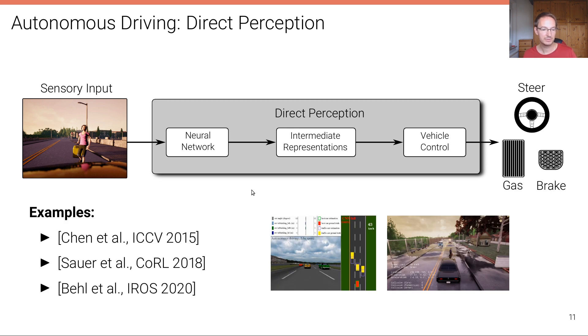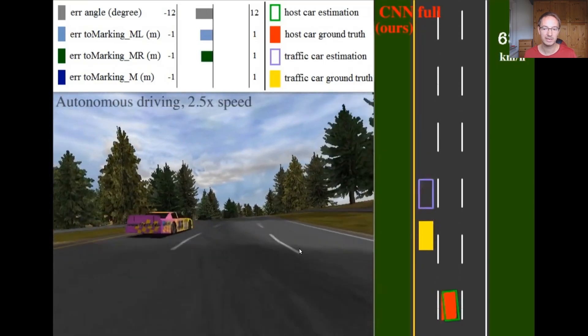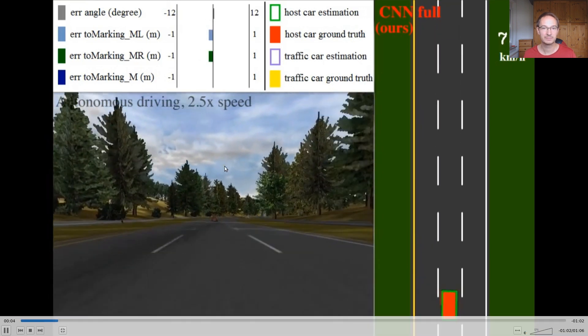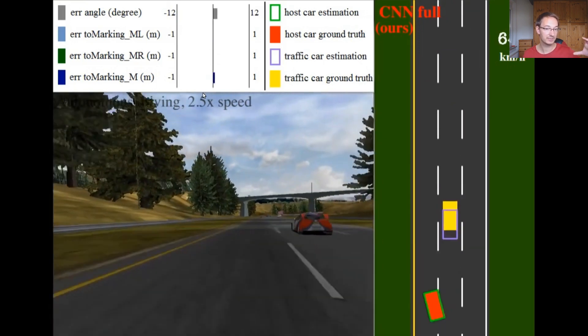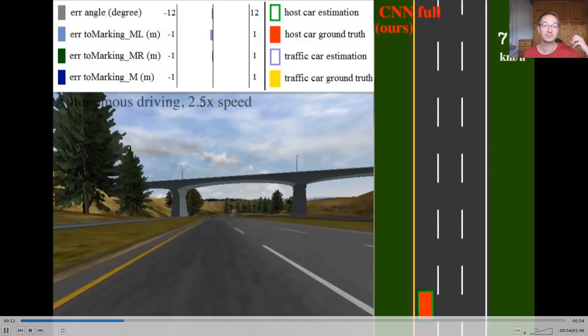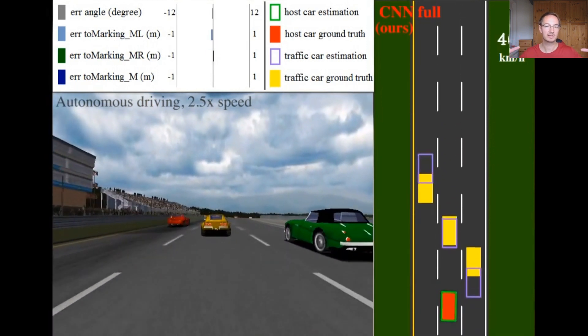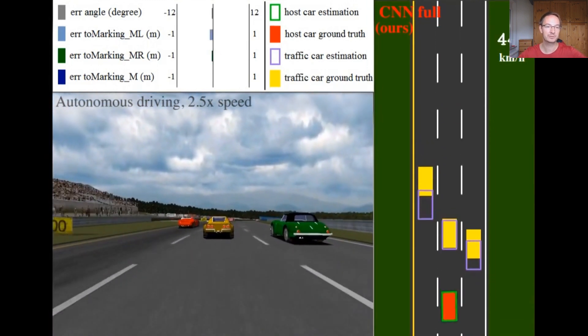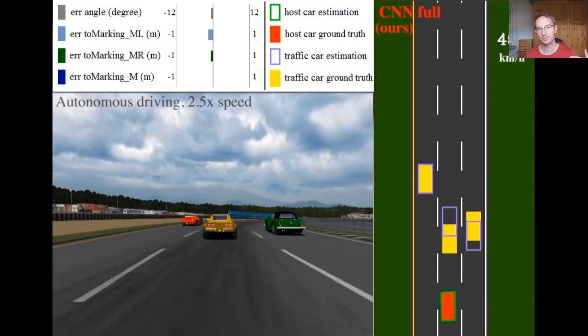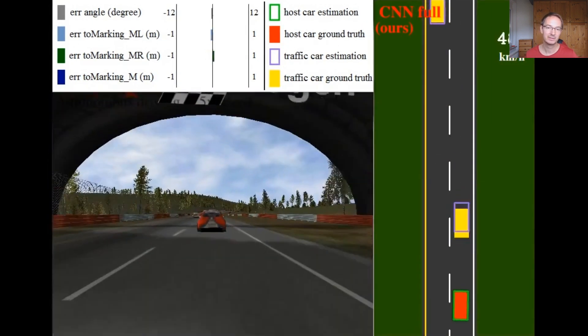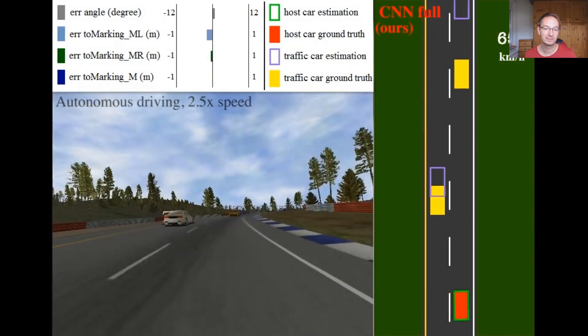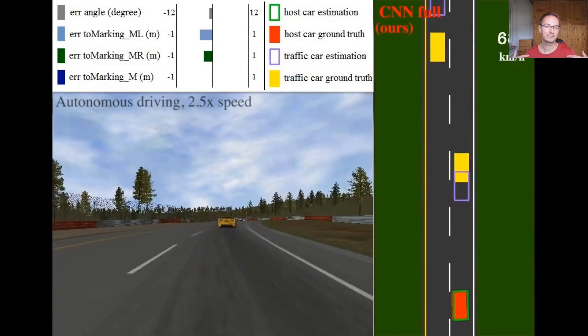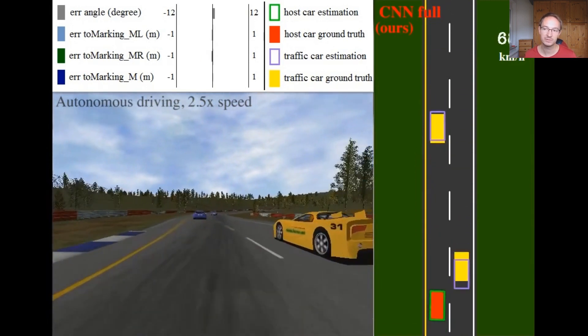There are several examples of this type of approaches in the literature. Here is one of the earlier ones for highway driving, where you can see the different so-called affordances that are predicted as an intermediate representation. In this case, the intermediate representation is not a semantic segmentation but this is a small low-dimensional signal of how far am I to the next car on my lane, how far am I to my next car on the left lane, how far am I to the next car on the right lane, and how far am I to the left and to the right lane markings, etc. And based on this, the vehicle controller then steers the vehicle.